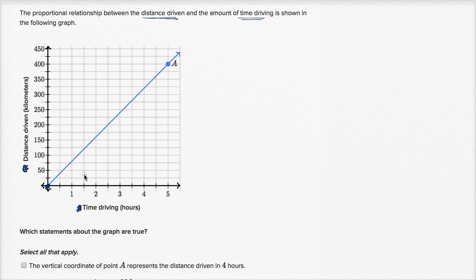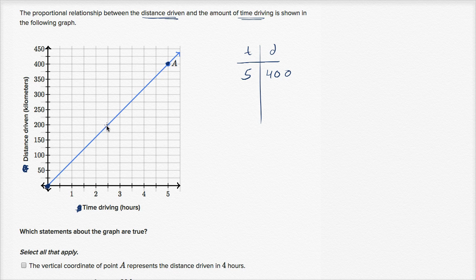You could also see that by taking out some points. Looking at where the graph hits a well-defined point: at point A, when our time is five hours, our distance driven is 400 kilometers. And at another point, when our time is two and a half hours, our distance driven is 200 kilometers. Notice the ratio between these variables at any one of these points is the same — 400 divided by five is 80, and 200 divided by 2.5 is also 80.